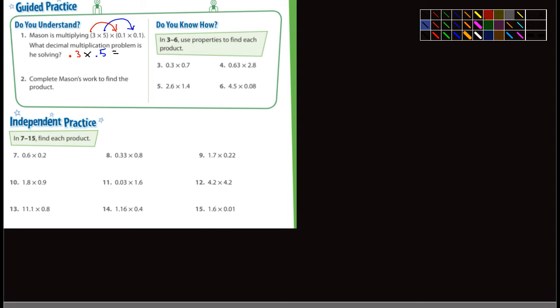And then it says complete Mason's work. 0.3 times 0.5. Well, what's 3 times 5? That's 15. Move the decimal over two places. 0.15 is the answer.